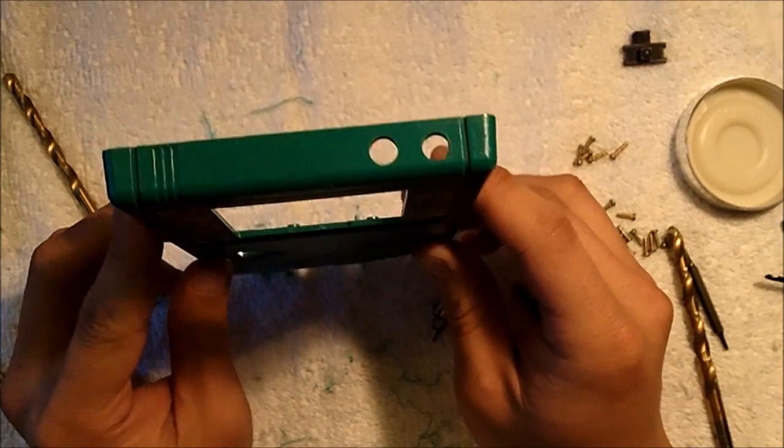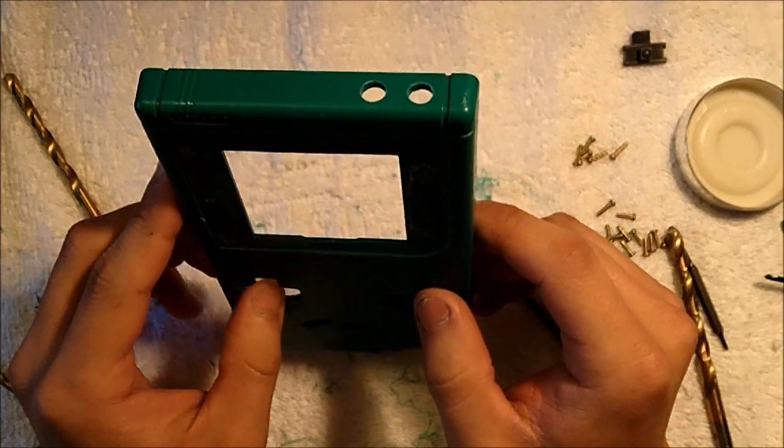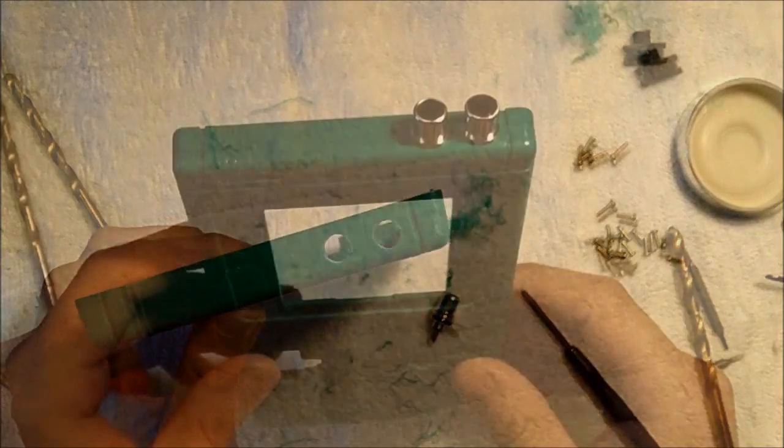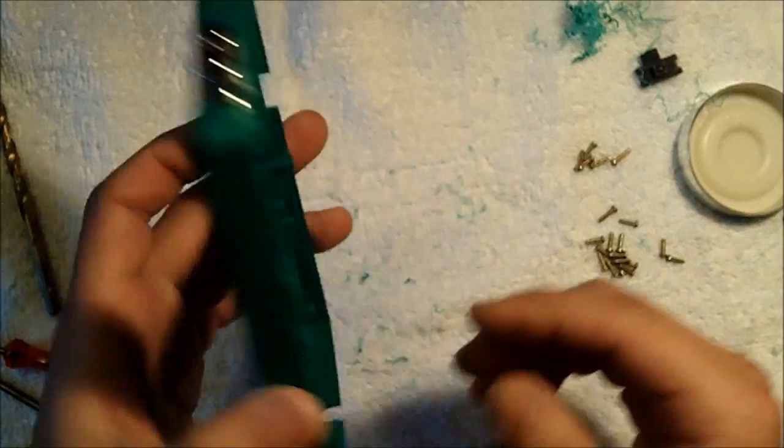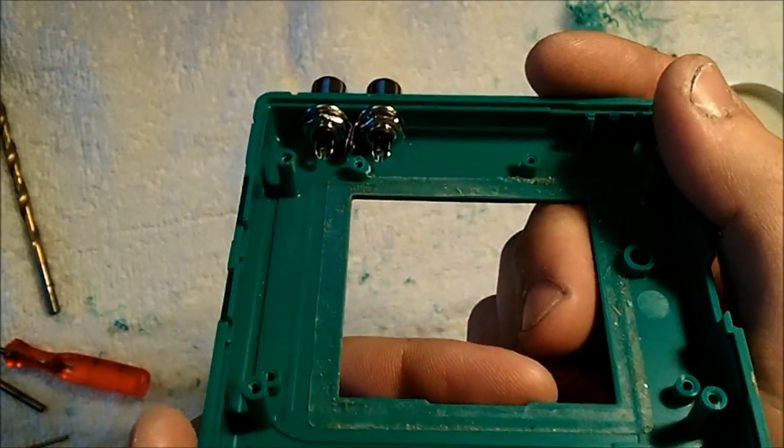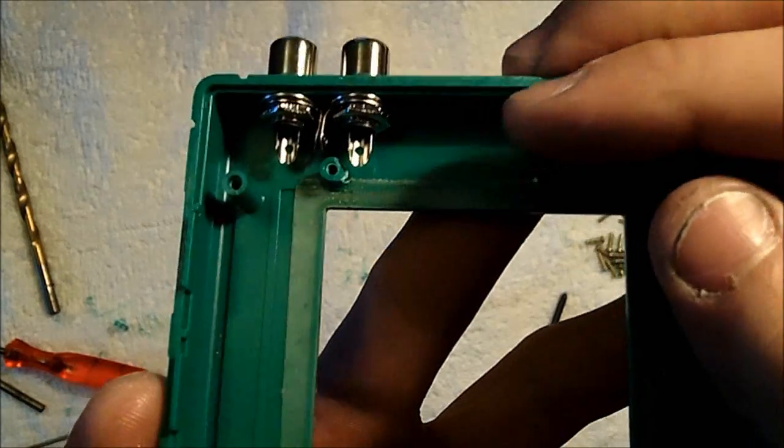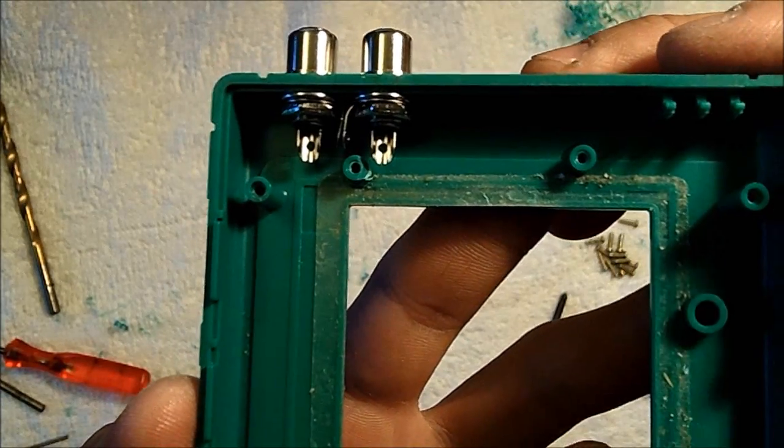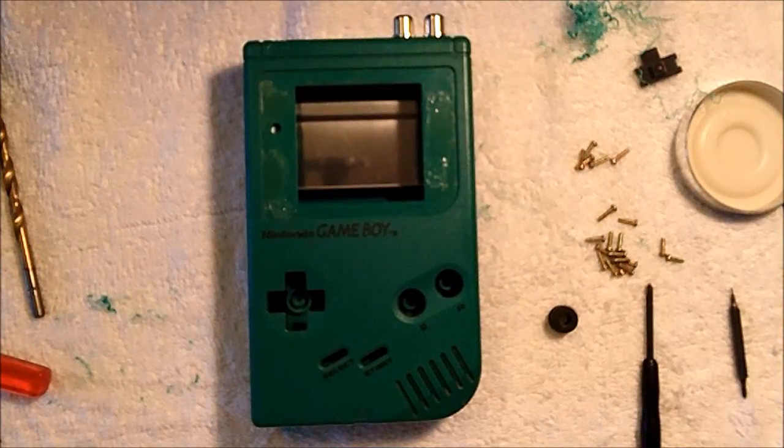After you're done drilling, you should have something similar to this at the top of your Game Boy. And we're going to be installing the RCA jacks into the case to make sure they all fit well. This is what it should look like after you are done installing the RCA jacks into the front case of the DMG-01 Game Boy. For the ends of the RCA jacks, make sure they are facing forward as not to interfere with the circuit board when you reinstall it into the front of the case.